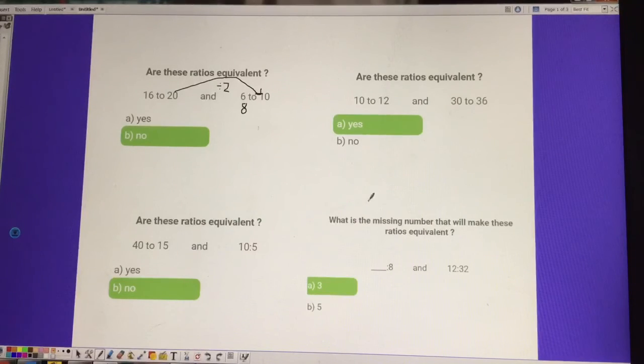Let's check the last question here. What's the missing number that will make these ratios equivalent? So, something to 8 and 12 to 32. Well, to get from 8 to 32, I can multiply by 4. So, in my brain, I'm like, what times 4 gives me 12? It's 3.